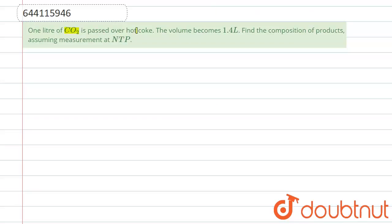One liter of CO2 is passed over hot coke. The volume becomes 1.4 liter. Find the composition of products, assuming measurement. So now the reaction that involves in this: